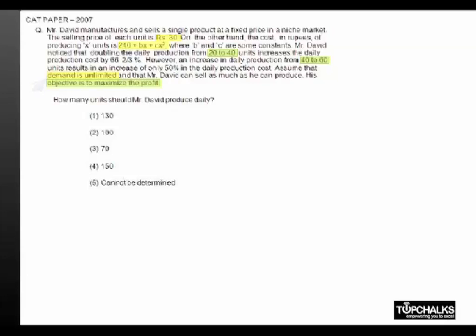What is the method? First, I'll find B and C based on the given conditions. Second, we'll write the profit function, which is total revenue minus total cost, and see at what value of production this gets maximized.